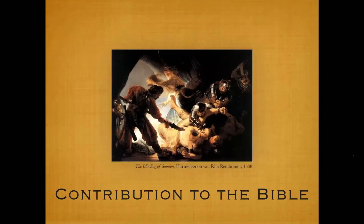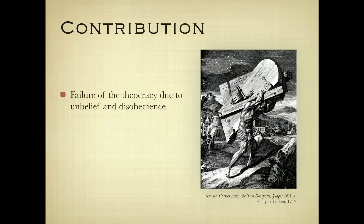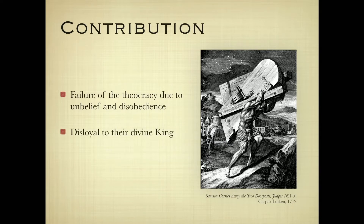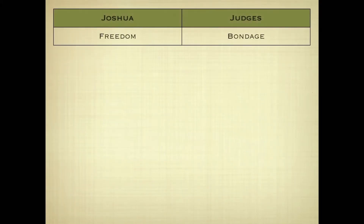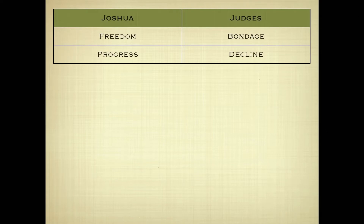Judges records the failure of the theocracy due to the lack of faith and obedience. The problem wasn't the rule of God — the problem was the disobedience of man. They did not want to obey God, and ultimately they cried out for a visible king instead. After the time of Judges, it would move to the monarchy. In this real way they were disloyal to their divine king, wanting an earthly king.